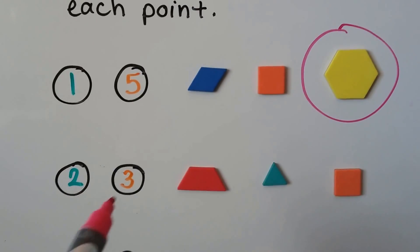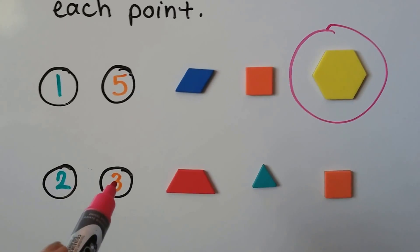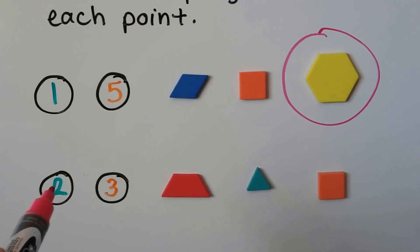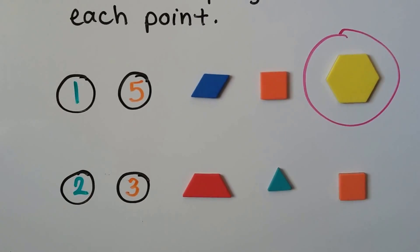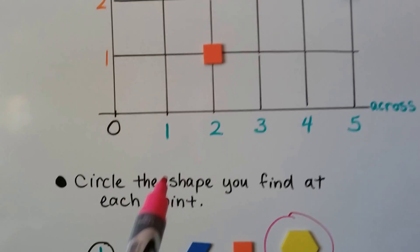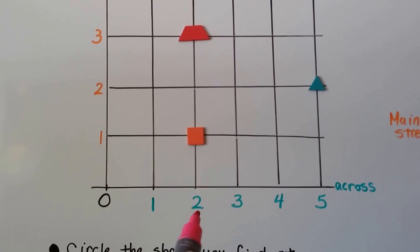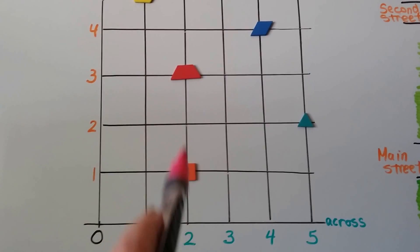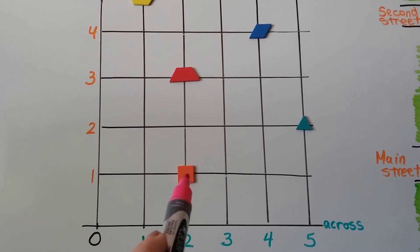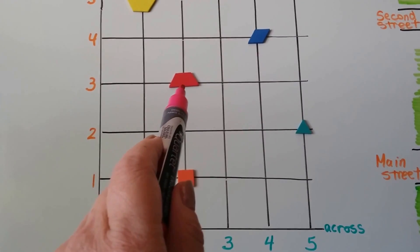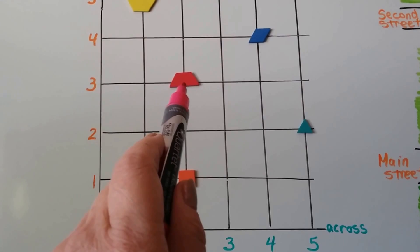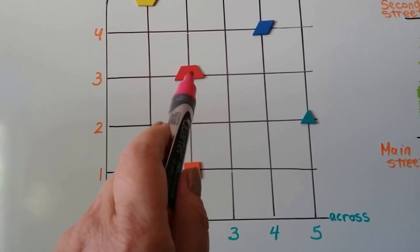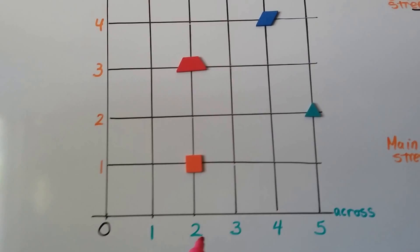Where does the green 2 and the orange 3 meet? Which shape is there? Let's find the green 2, it's right here. We'll follow it up to the orange 3. Look, it's a trapezoid. A red trapezoid is at the green 2 and the orange 3.